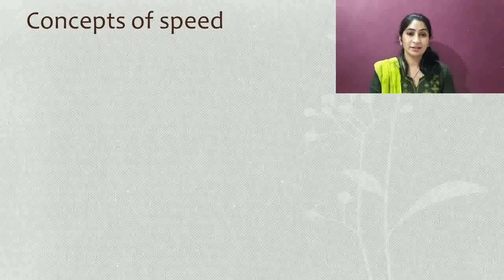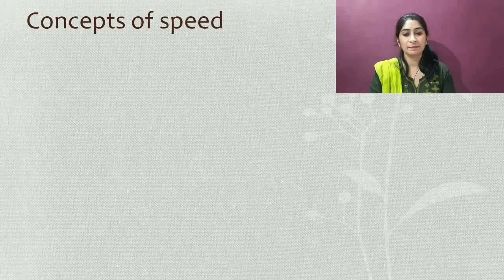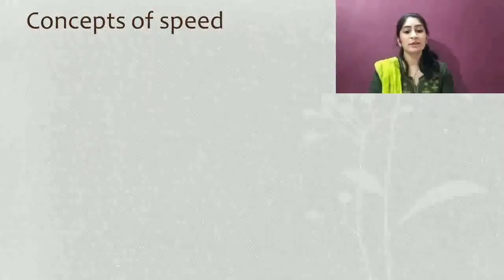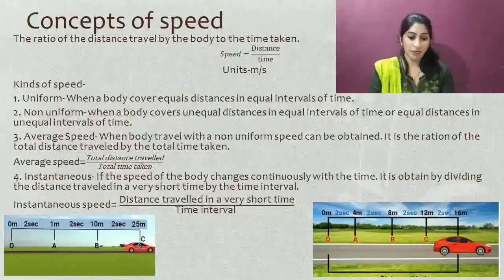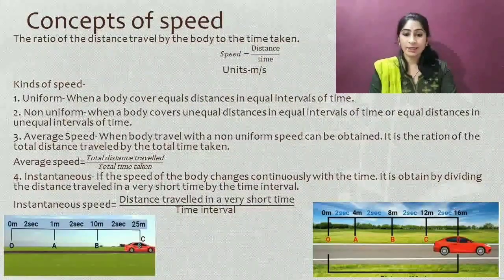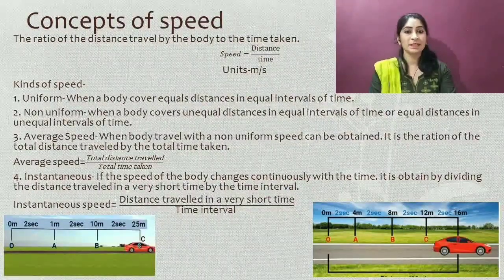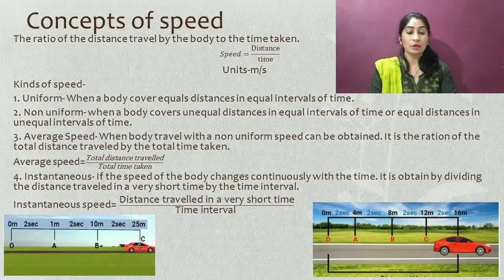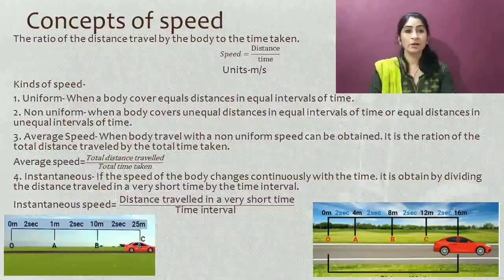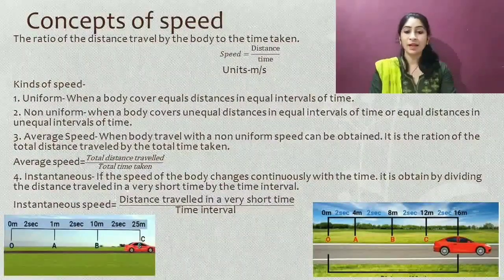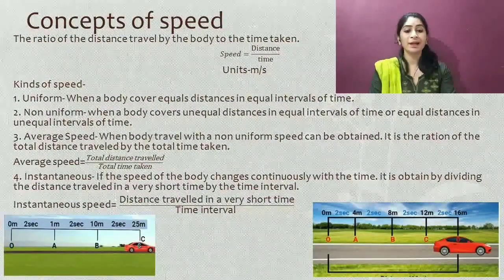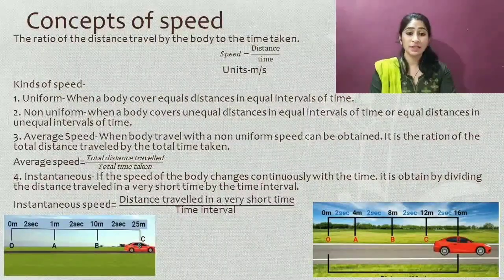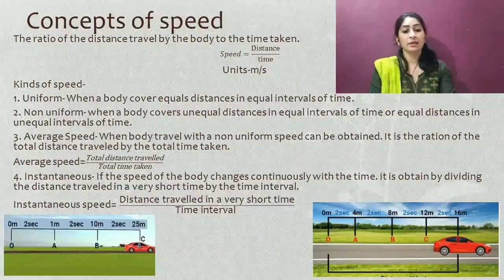Now we will see our next scalar quantity — speed. Speed is the ratio of the distance travelled by a body to the time taken. The formula of speed is distance divided by time. The unit of distance is meter and the unit of time is second, so the unit of speed is meter per second.